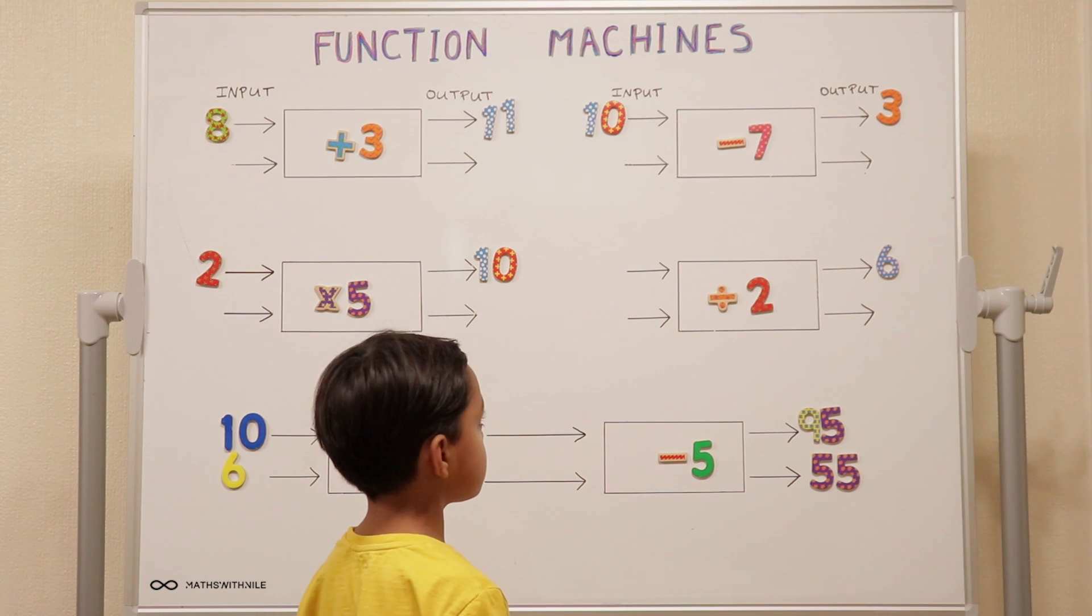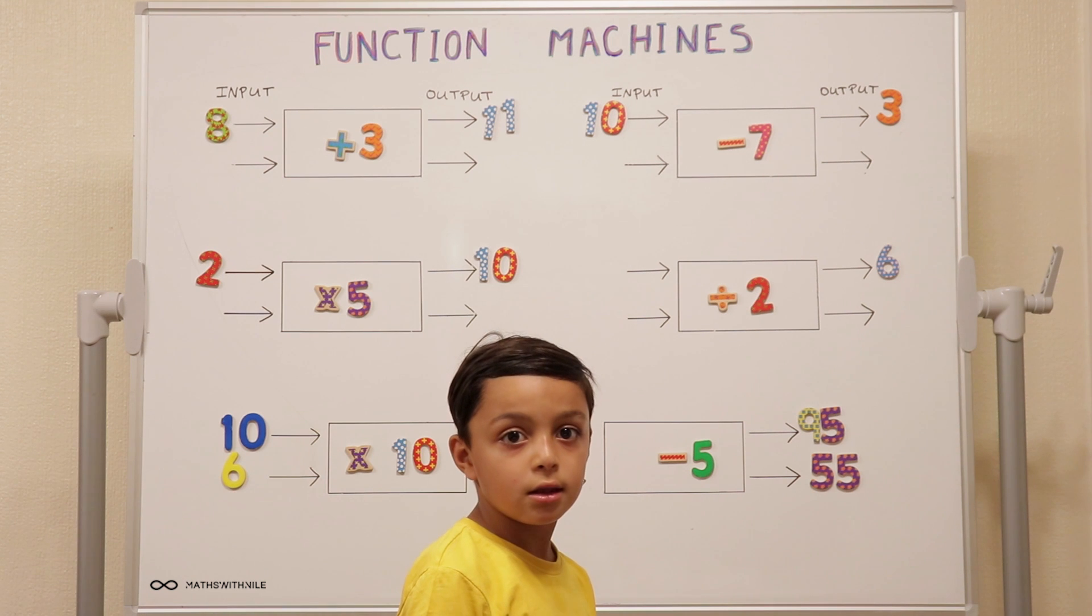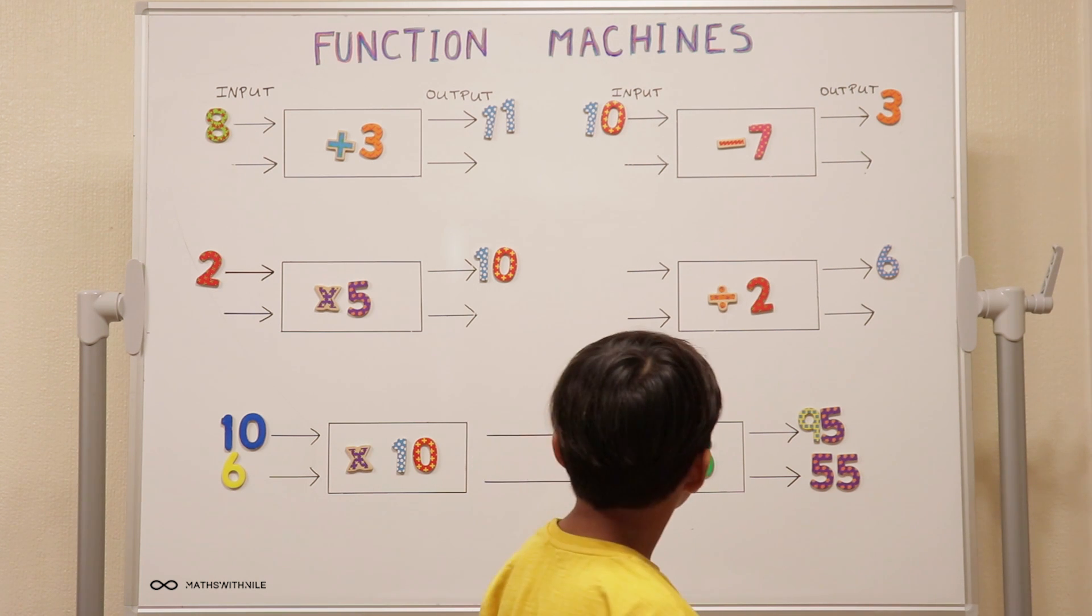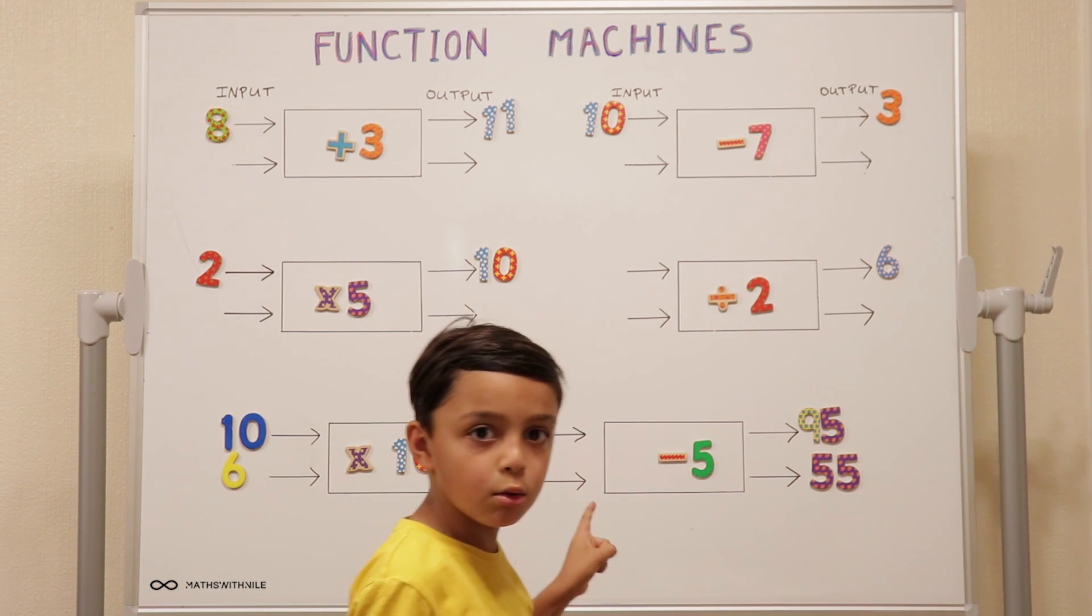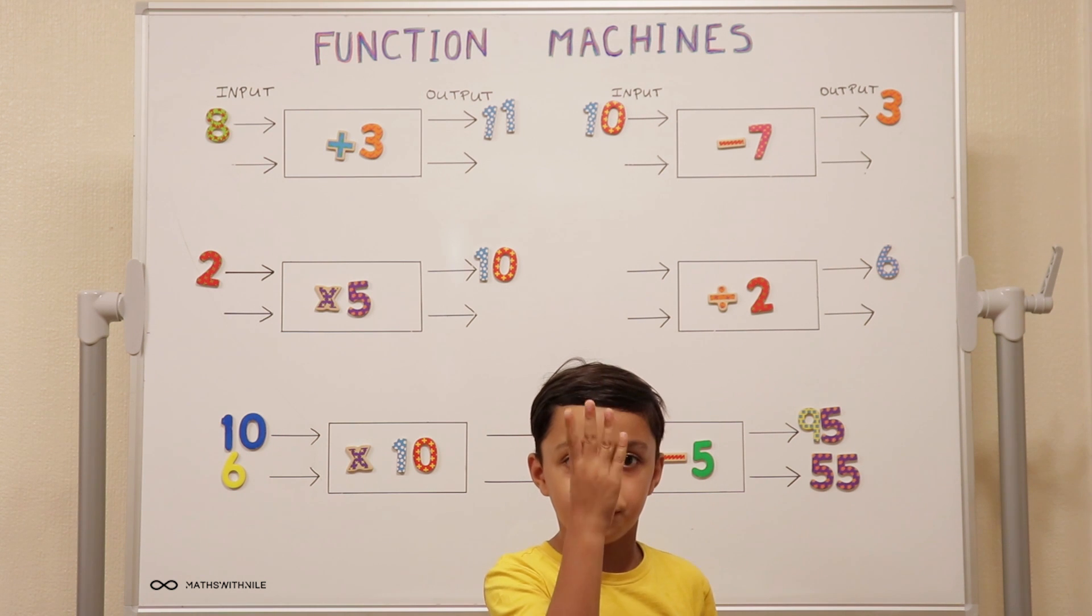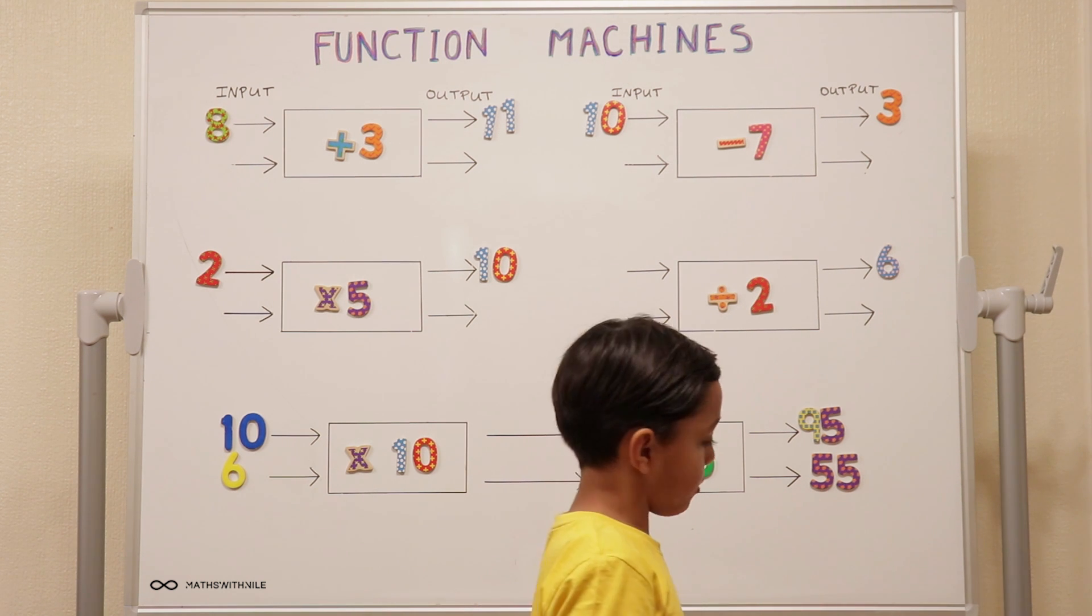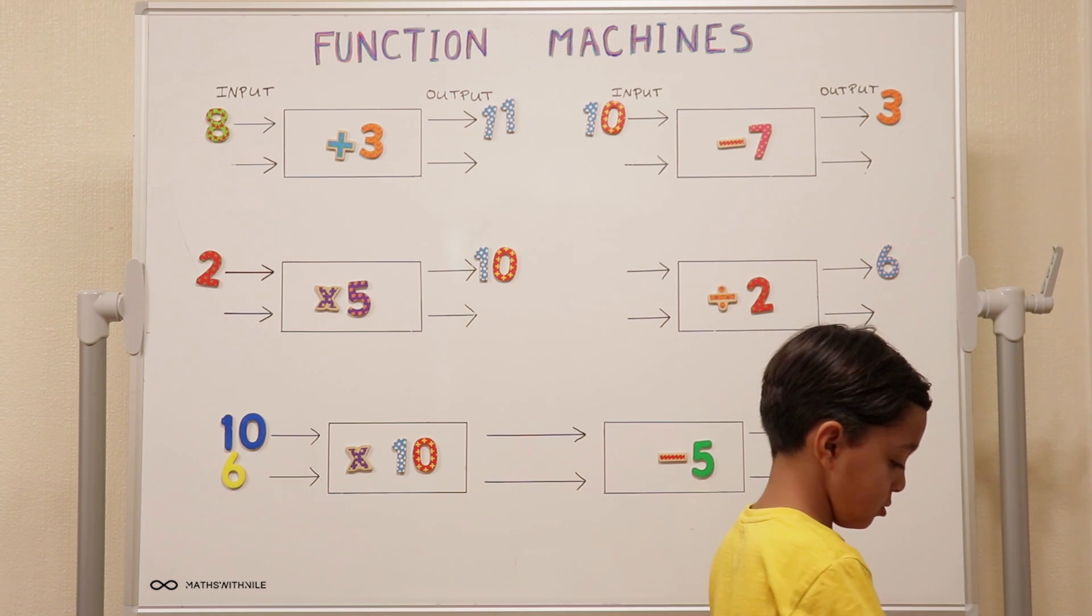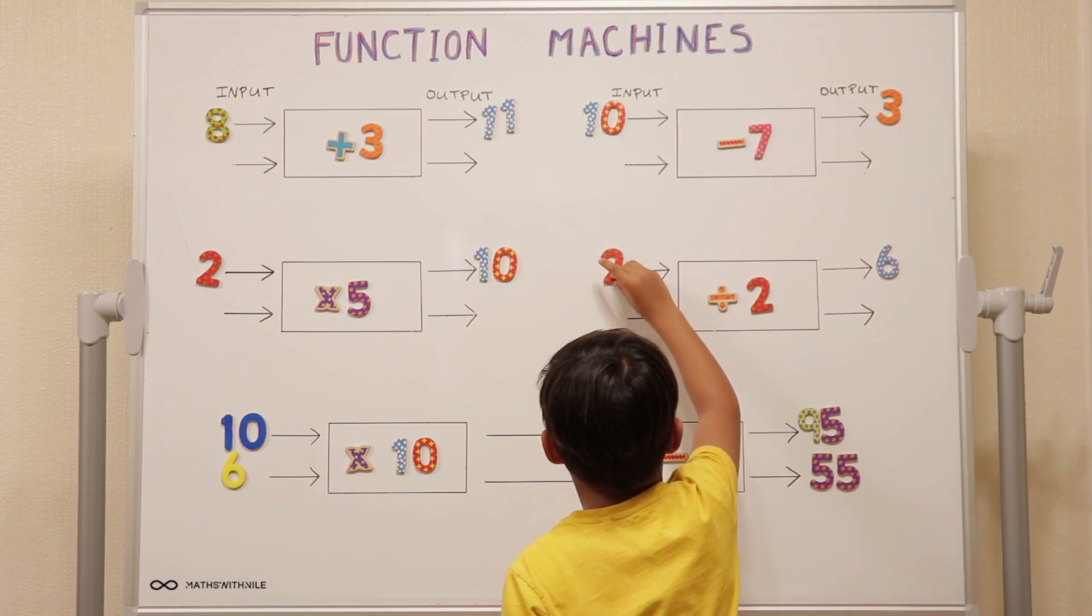So how would you find the input if the output is six? Let's think about what's the inverse of division? Times. Oh, so six times two. Yes. Six lots of two. Two, four, six, eight, ten, twelve. So put your twelve as your input. Very good.